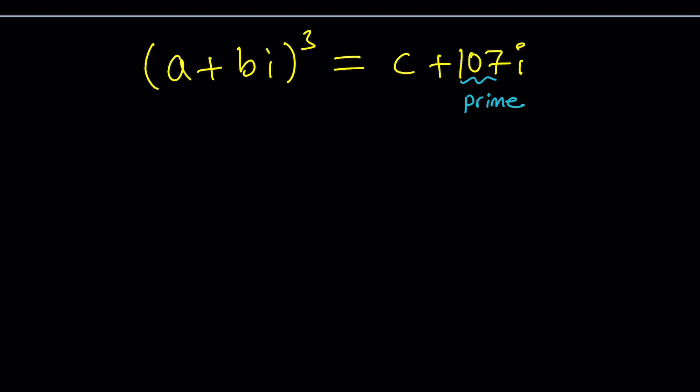And when you expand it, you kind of have to think about it this way. It's going to be A cubed minus 3AB squared. That's going to be the real part. And then the imaginary part is going to be 3A squared B minus B cubed. It's kind of like A minus B cubed with a little variation. You have to multiply the imaginary part by I, right?